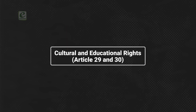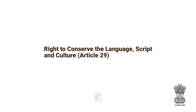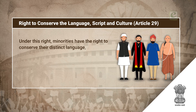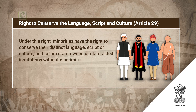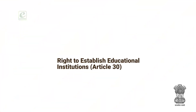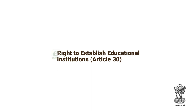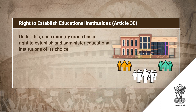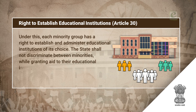Cultural and Educational Rights, Articles 29 and 30. Article 29 — Right to conserve language, script and culture: Minorities have the right to conserve their distinct language, script or culture and to join state-owned or state-aided institutions without discrimination. Article 30 — Right to establish educational institutions: Each minority group has the right to establish and administer educational institutions of its choice. The state shall not discriminate between minorities while granting aid to educational institutions.